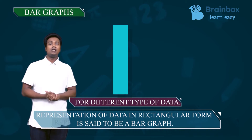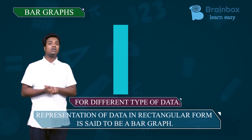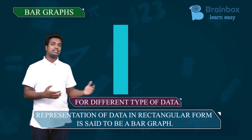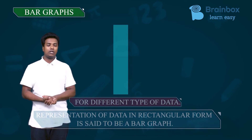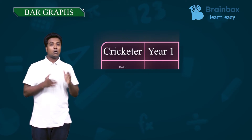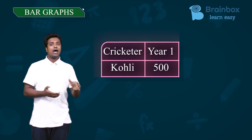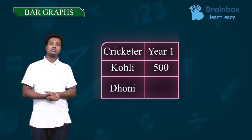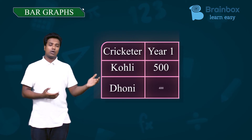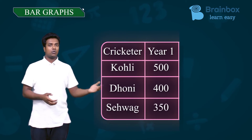Let us consider an example so you will clearly understand what a bar graph means. Suppose we analyze cricket data for a particular year: Kohli has scored 500 runs, Dhoni has scored 400 runs, and Sehwag has scored 350 runs.